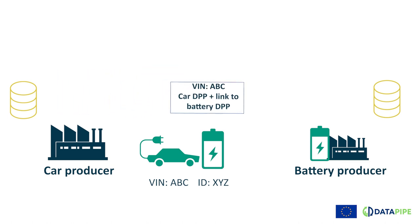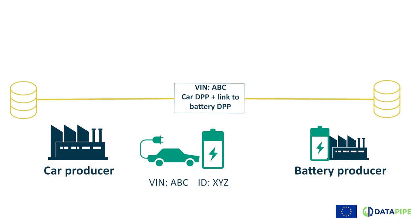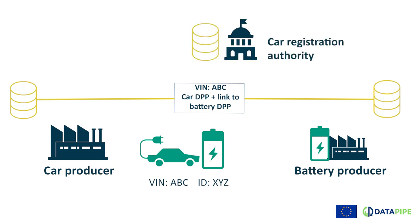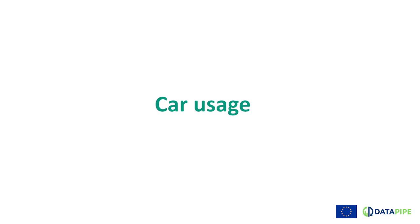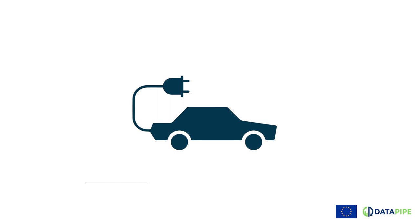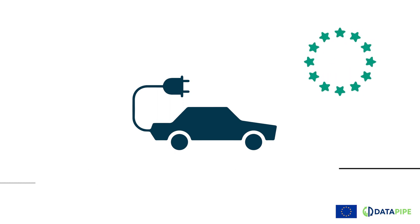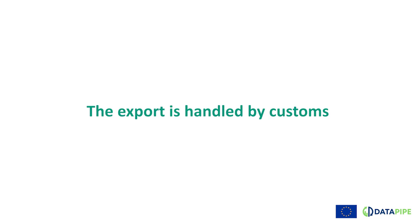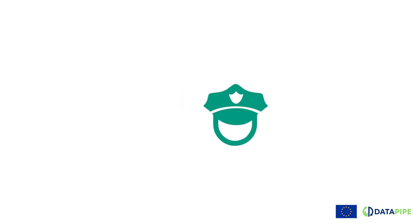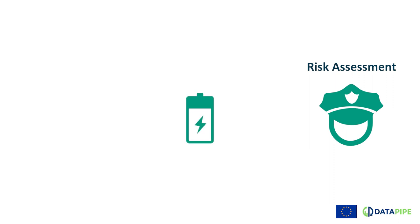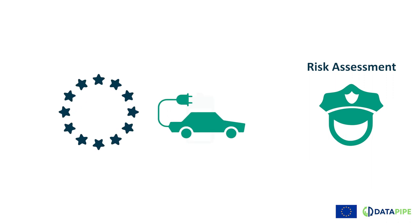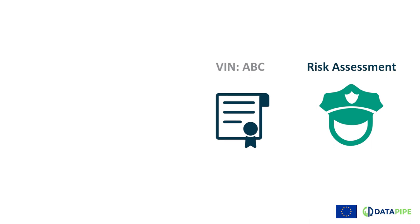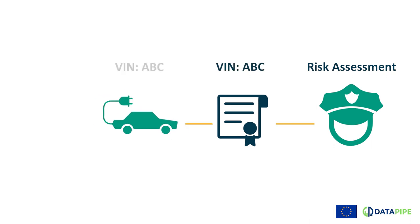We now have two product passports that are linked together. When the car producer places the car on the market, he registers the car with the authorities by providing the car's VIN number and the weblink to the car's DPP. The car is sold and the owner uses it. At some point, the owner decides to export the car to a country outside the EU. One of the roles of Customs is to prevent end-of-life vehicles from being exported. During risk assessment, one of the indicators used could be battery state of health. From the export declarations that Customs receives, it has only the VIN number of the car, but no information on the battery's state of health.